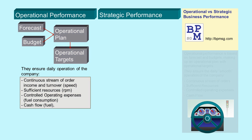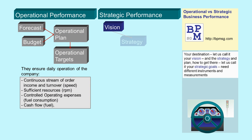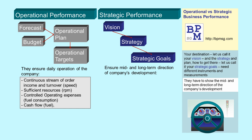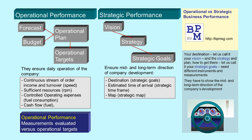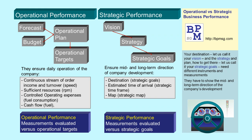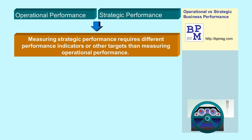Your destination — let us call it your vision — and the strategy of how to get there — let us call it your strategic goals — need different measurements and instruments. They have to show the mid- and long-term direction of the company's development. Operational performance is evaluated with measurements of operational targets; strategic performance is evaluated with measurement of strategic targets. Measuring strategic performance requires a different set of key performance indicators or other targets than measuring operational performance.